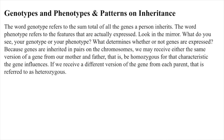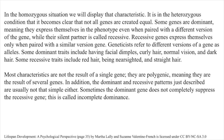Genotypes and Phenotypes and Patterns of Inheritance. The word genotype refers to the sum total of all the genes a person inherits. The word phenotype refers to the features that are actually expressed. What determines whether or not genes are expressed? Because genes are inherited in pairs on the chromosomes, we may receive either the same version of a gene from our mother and father — that is, be homozygous for that characteristic — or a different version, referred to as heterozygous. In the heterozygous condition, it becomes clear that not all genes are created equal. Some genes are dominant, meaning they express themselves in the phenotype even when paired with a different version of the gene, while their silent partner is called recessive.